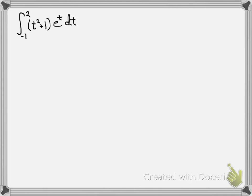So we're asked to find the definite integral from negative 1 to 2 of t squared plus 1 times e to the t. And this is going to be an integration by parts.